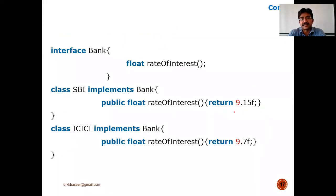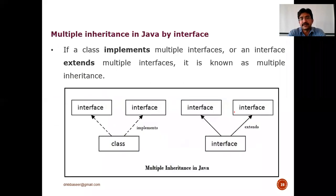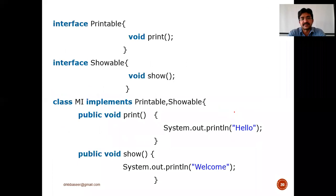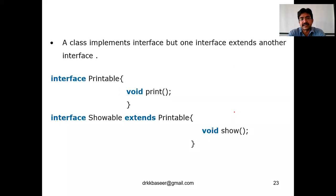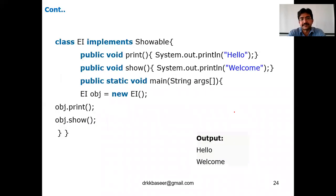We've seen the bank example where we use an abstract bank interface with an abstract method. A method without body is called a default method and can be used in an abstract class or interface. Multiple inheritance is also supported — a class can implement two different interfaces, or one interface can extend two different interfaces. The child interface here is 'Showable' and the parent is 'Printable'.